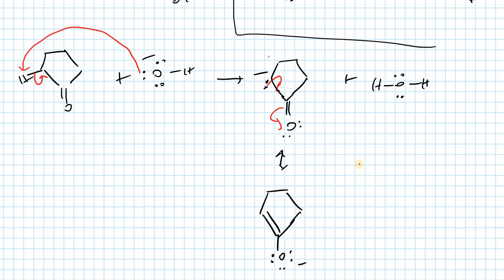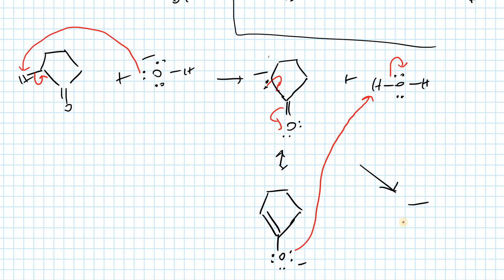In the next step we need to protonate the enolate. There is going to be a reaction between water and the enolate ion, and we are going to form the enol and the catalytic base again, giving us enol plus OH minus. From the keto form we've shown enol formation under basic conditions. Thank you so much for watching.